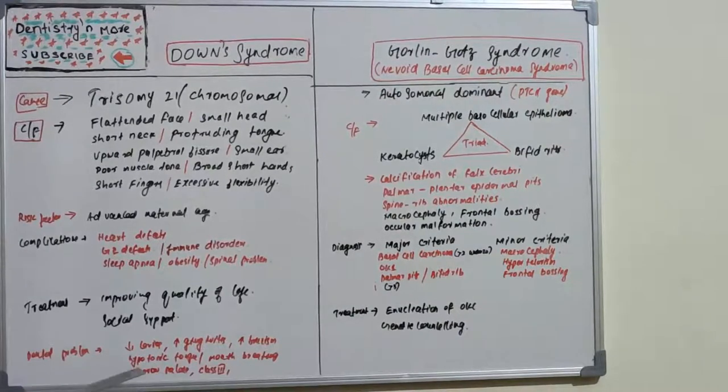There will be increased bruxism, hypotonic tongue, and mouth breathing. These persons will have narrow palate and Class 3 prognathic profile. Down syndrome is a multi-system involvement due to trisomy 21. Now let's move on to Gorlin-Gott syndrome.